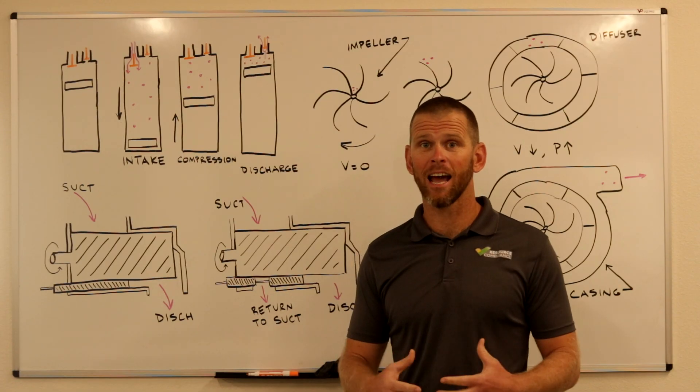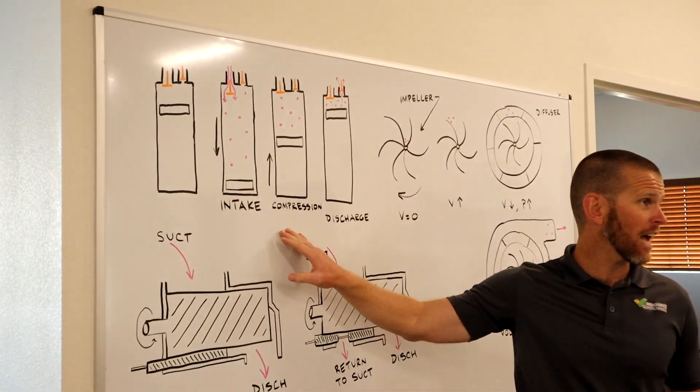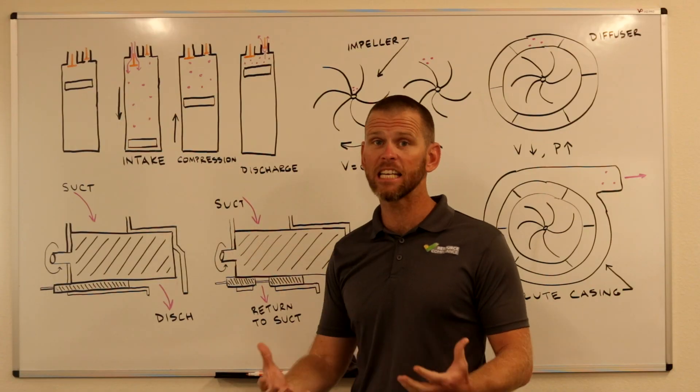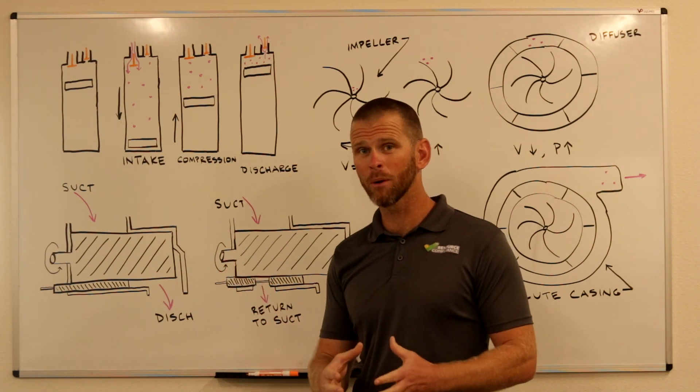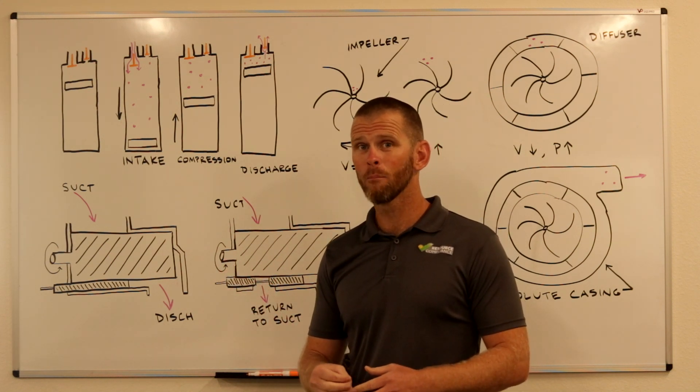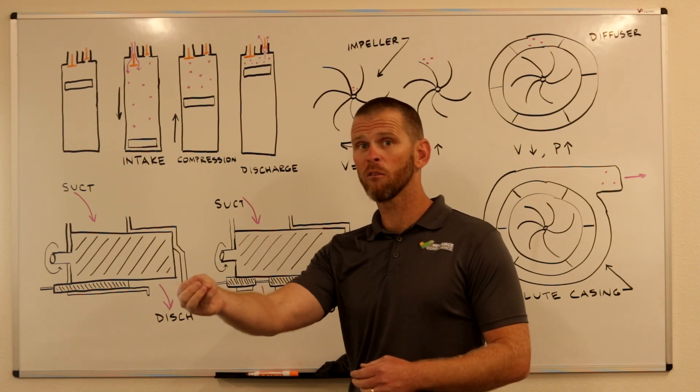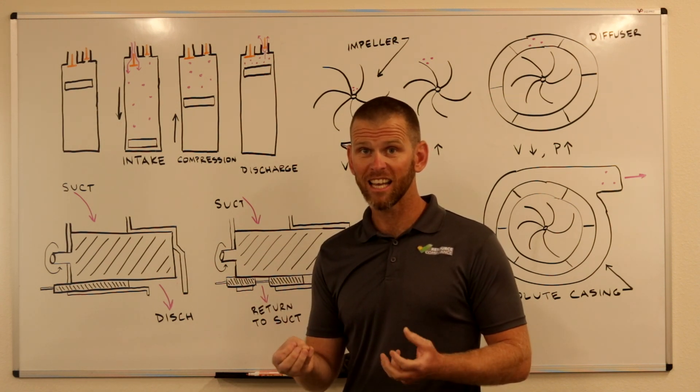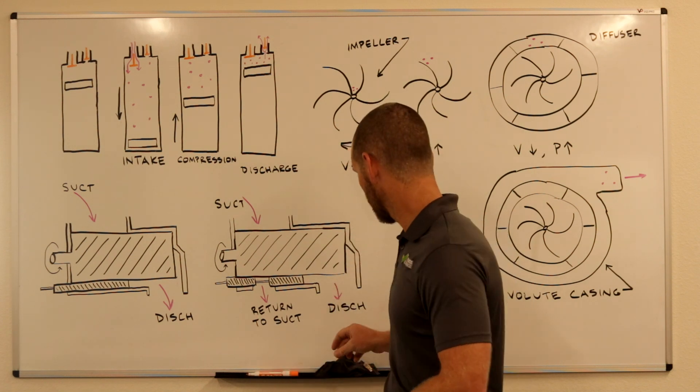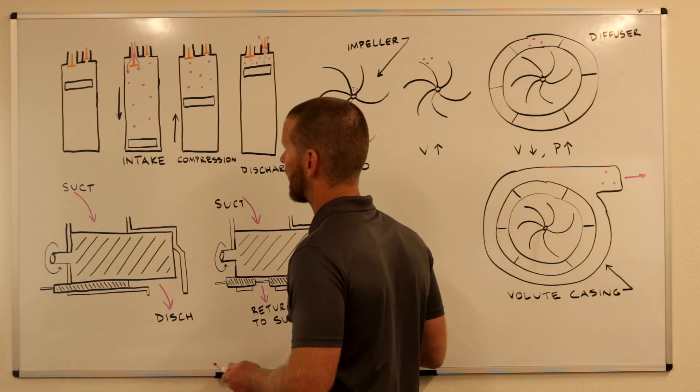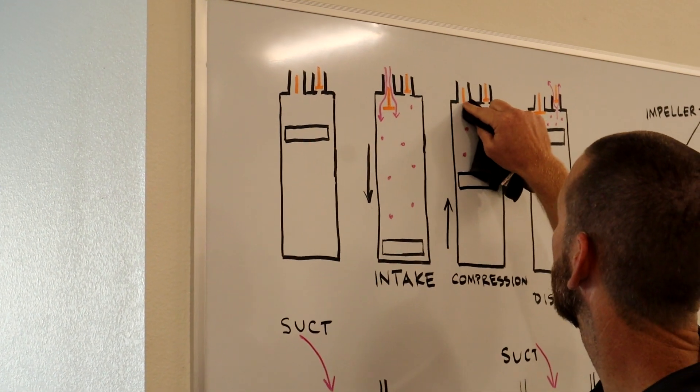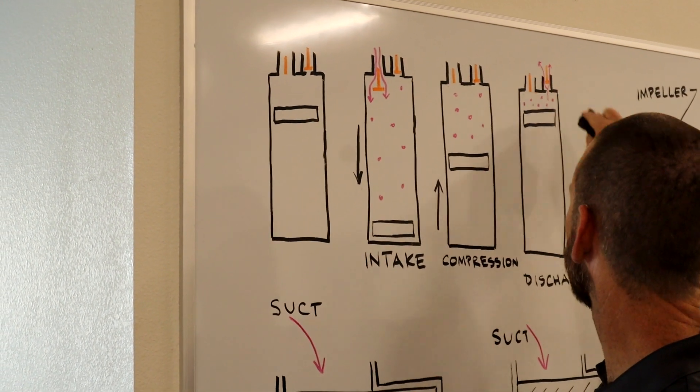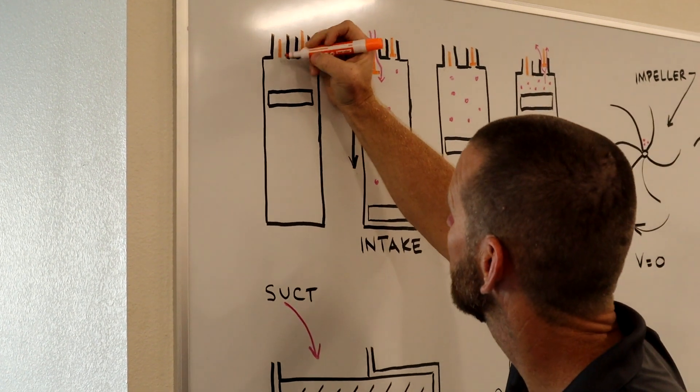So to understand how unloading happens in a reciprocating compressor, I want to go back to this diagram we looked at earlier because it's actually kind of easy to understand once you're familiar with the compression process. Reciprocating compressors are unloaded by using a mechanism to force the suction valves open for all parts of the strokes.